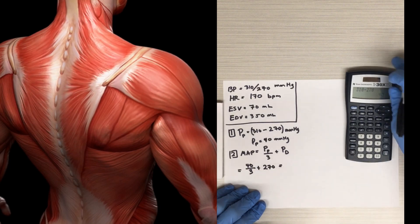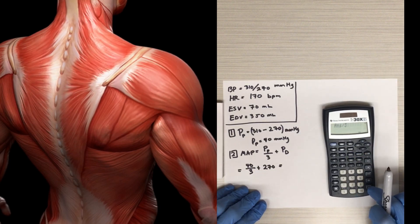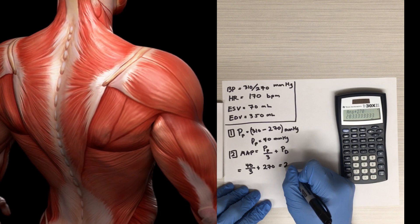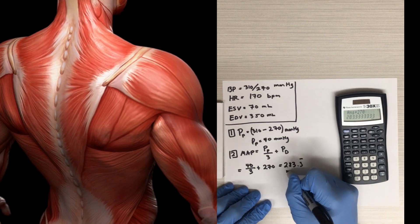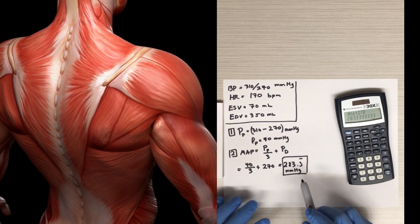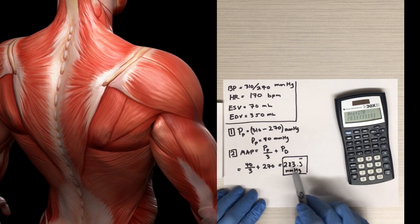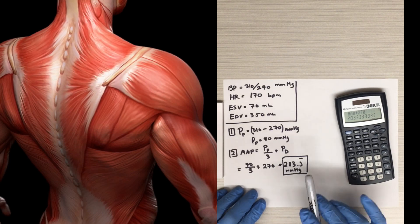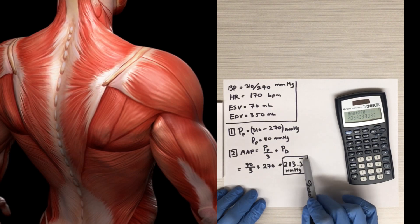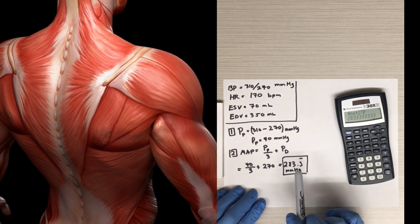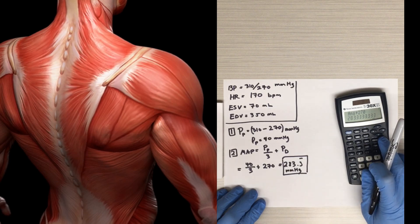So our mean arterial pressure would be 40 divided by 3, plus 270. The mean arterial pressure in this example is 283.3 repeating millimeters of mercury. Now, the normal range at rest is about 70 to 110 mmHg, but that range is defined for a person at rest. If you have a person doing a maximal deadlift, you're going to have a mean arterial pressure that's very, very high — so mean arterial pressures can be extremely elevated during exercise.